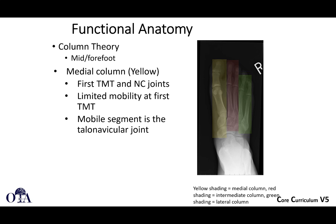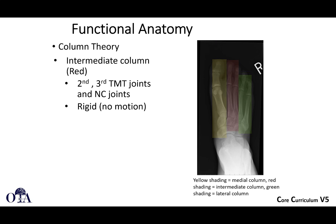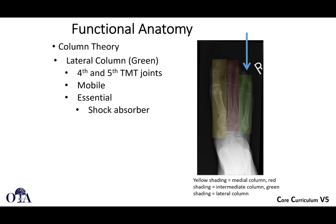So anatomy — there are column theories, a couple of column theories. In this particular column theory, the medial column is sort of like your first ray: the first tarsal, metatarsal, and naviculocuneiform joints. This is fairly rigid with limited mobility; the mobile segment is really at the tail of the navicular joint. The intermediate column, shown here in red, is your second and third TMT and navicular cuneiform joints, which is also fairly rigid with really no motion. And then you have your lateral column, which is your more mobile fourth and fifth TMT joints, essential for shock absorption on uneven surfaces.